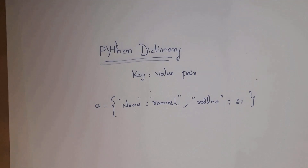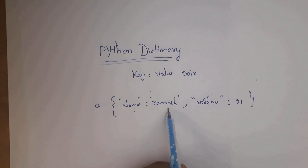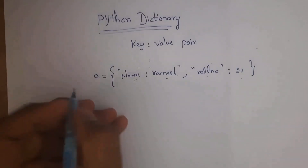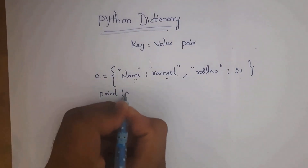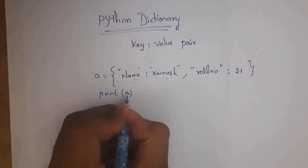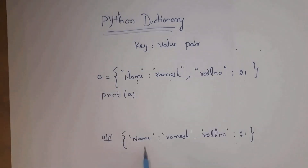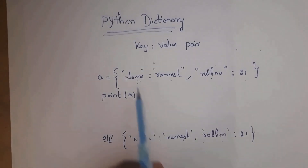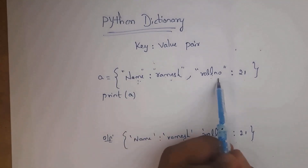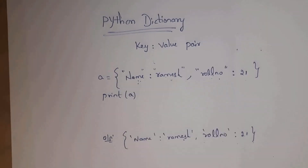Dictionaries store data as key-value pairs: 'name' and 'roll_number' are keys, 'ramesh' and 21 are values. When you write print(a), whatever data is inside variable a is displayed as output — you'll get {'name': 'ramesh', 'roll_number': 21}. Even though you write the strings in double quotations, the output will represent them in single quotations. Python dictionaries are ordered, meaning the output follows the same order as the input.